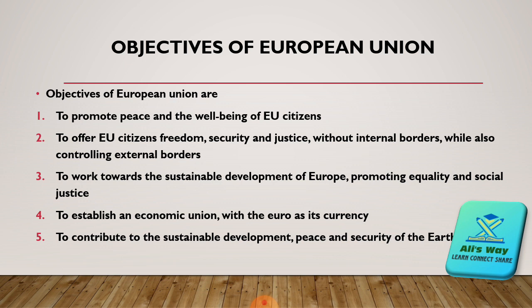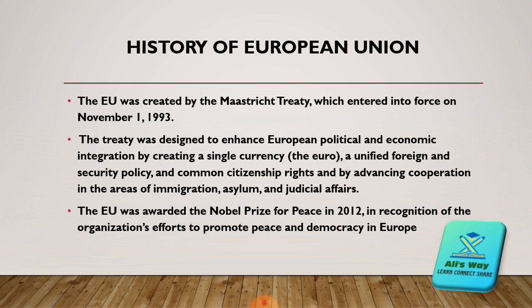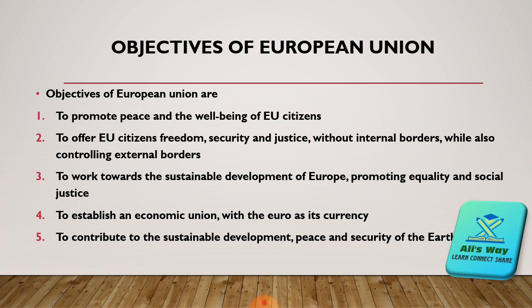Primarily, there are five objectives of the European Union, signed by the member states when the Charter of the European Union was signed in the Treaty of Maastricht. The objectives are: to promote peace and well-being of European citizens; to offer EU citizens freedom, security, and justice without internal borders while controlling external borders; to work towards the sustainable development of Europe, promoting equality and social justice; to establish an economic union with the euro as its currency; and to contribute to the sustainable development, peace, and security of the world.